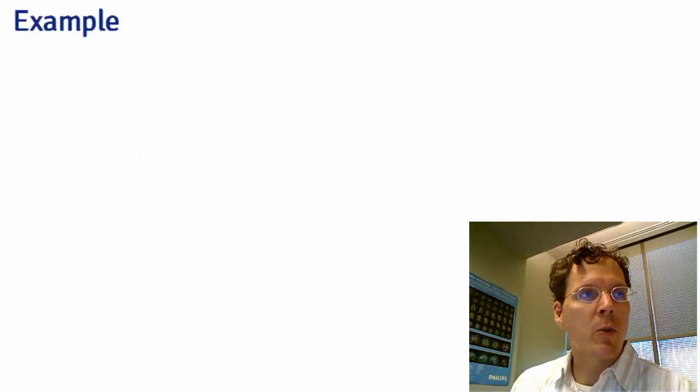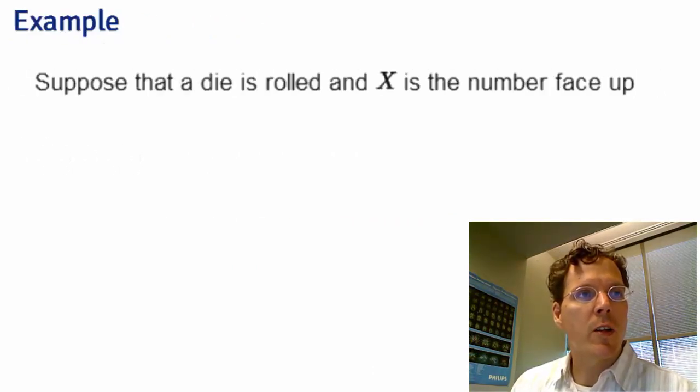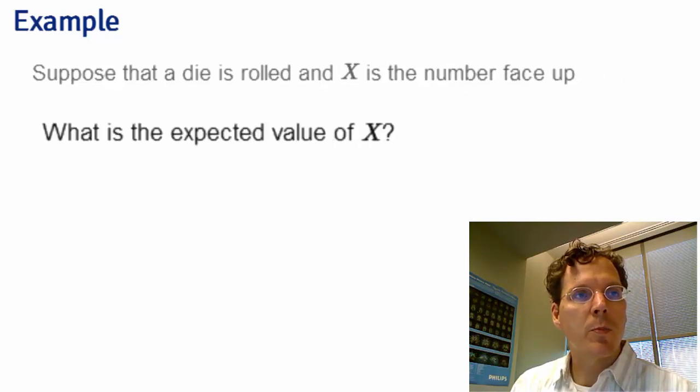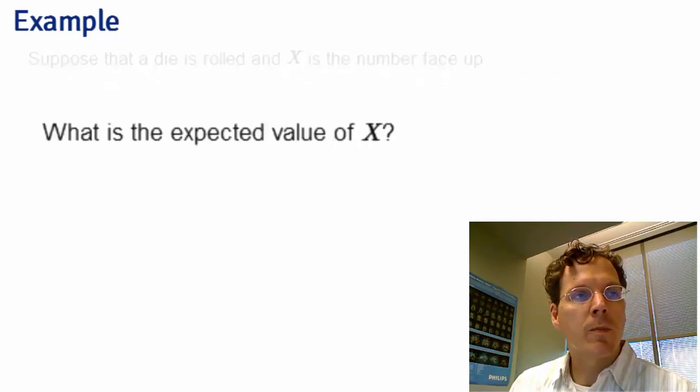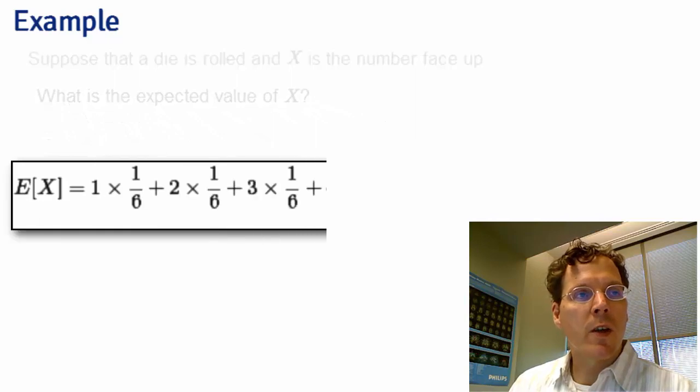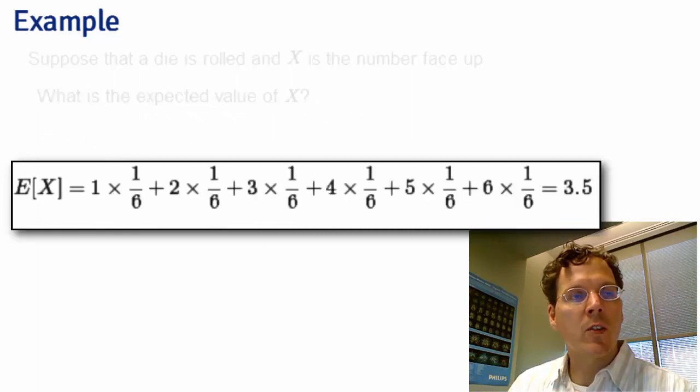What about a die? Suppose that a die is rolled and x is the number that is face up. What is the expected value of x? Here we take the values 1, 2, 3, 4, 5, 6, and multiply them times the probability that the random variable takes them, 1 sixth, 1 sixth, and so on. You get 3.5.